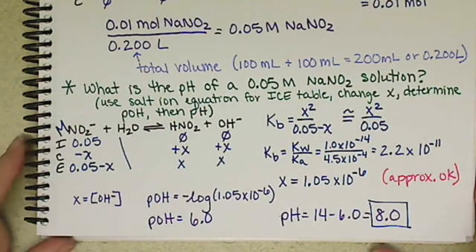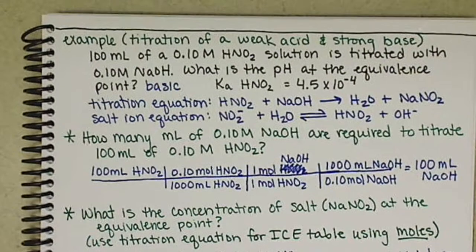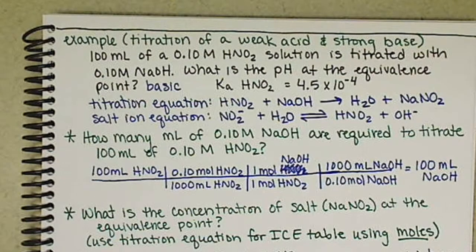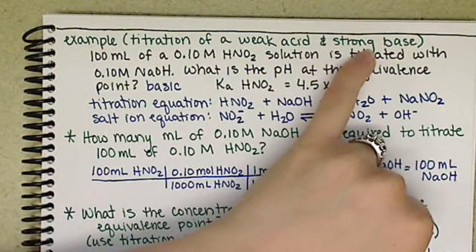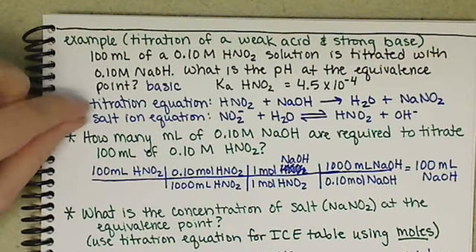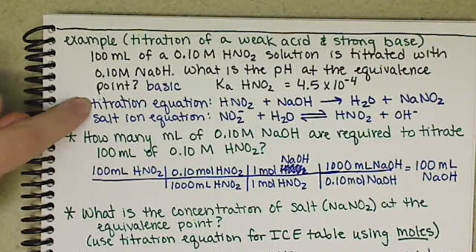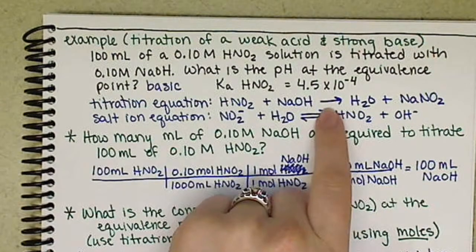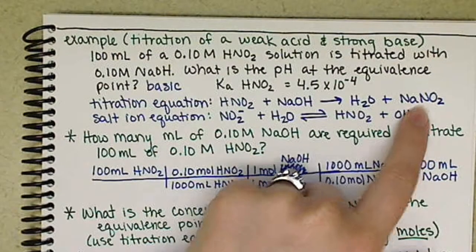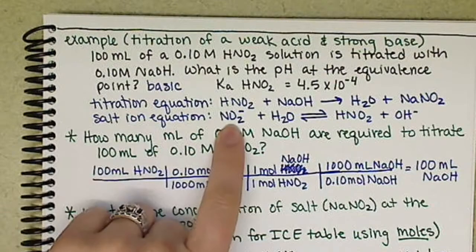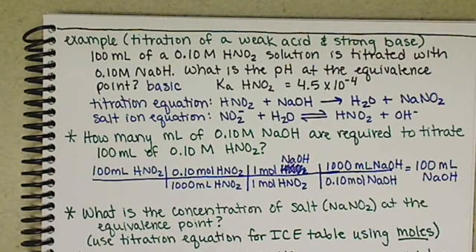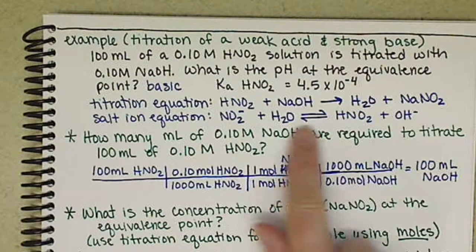Alright, so just to recap this question. We are looking at determining the pH of a titration at the equivalence point of a weak acid with a strong base. So helpful to write out the two equations. The first one, the titration equation. It's a neutralization equation. So it has a single forward reaction arrow forming water and a salt. And our salt ion equation is the ion from the salt here that's actually contributing to our pH. In this case we had a basic salt.